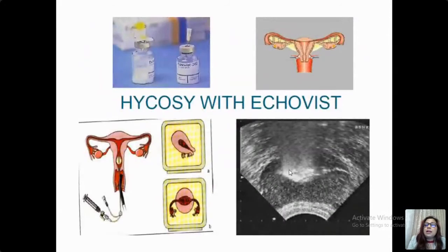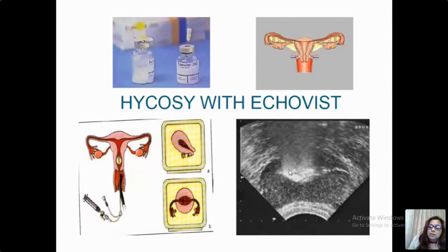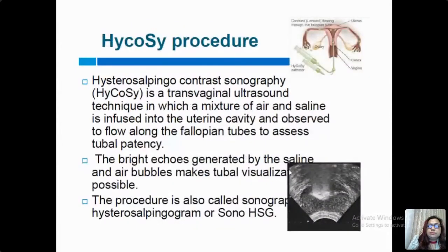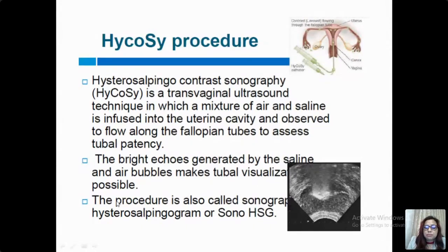Another test is hysterosono­salpingography with contrast: instead of saline, we use ExEm foam or Echovist — a specific ultrasonic contrast — which enhances the visibility of the endometrium as well as the fallopian tubes. It is a simple, well-tolerated outpatient procedure. Instead of saline, we mix air and saline and insert it into the endometrial cavity; the bright echoes generated by the saline and air bubbles make the tubal visualization possible. The procedure is also known as sono-HSG.